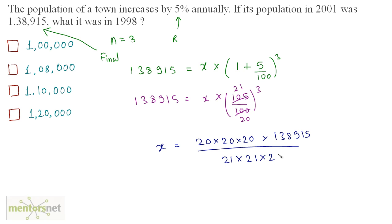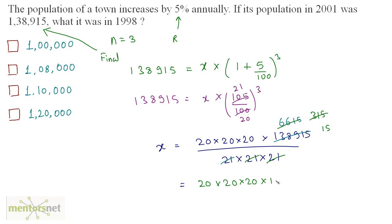So 21 times 21 times 21. Dividing 1,38,915 by 21 gives 6,615; dividing again by 21 gives 315; dividing once more by 21 gives 15. So we have 20 times 20 times 20 times 15, which equals 1,20,000. So option D is the correct answer.